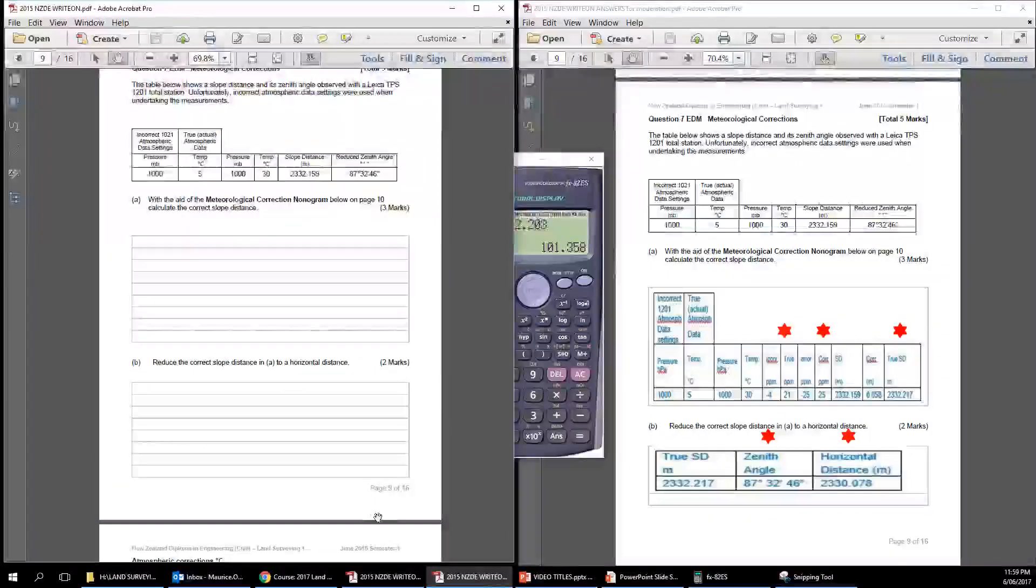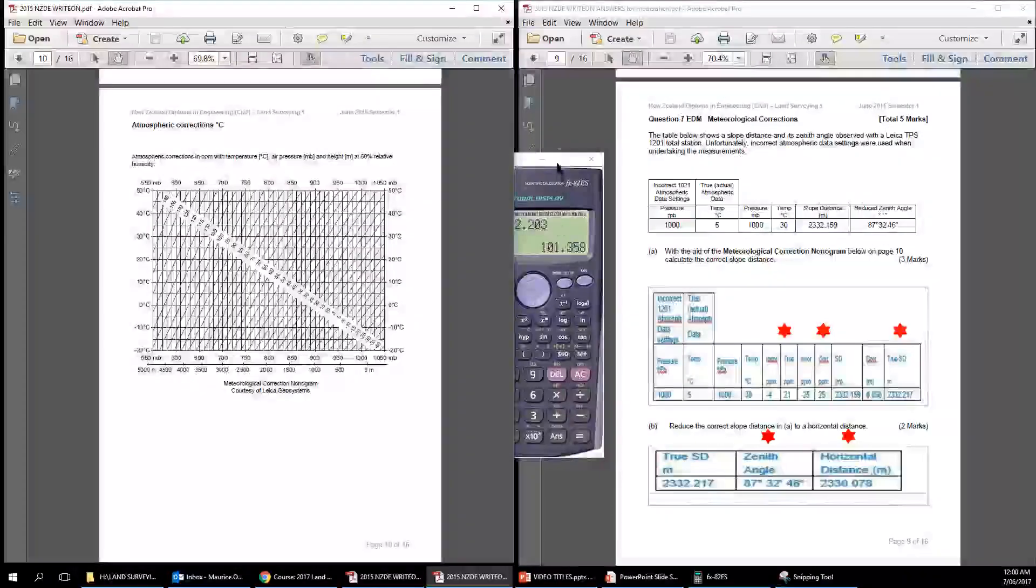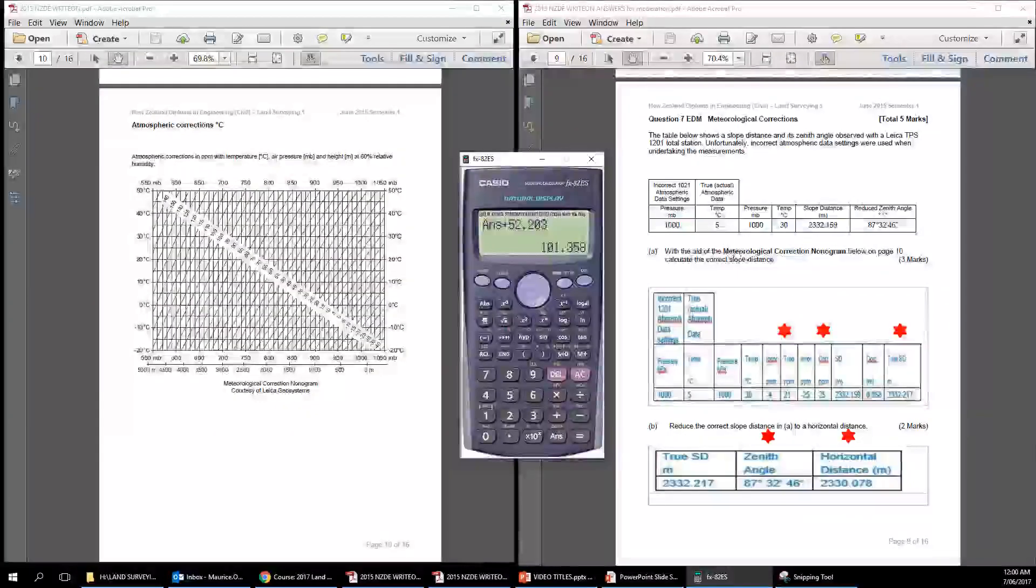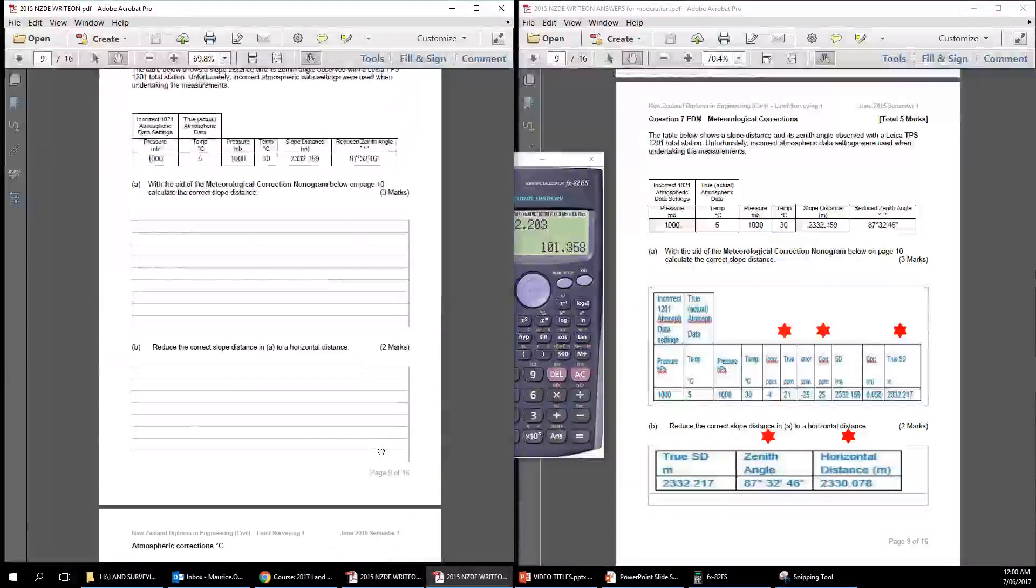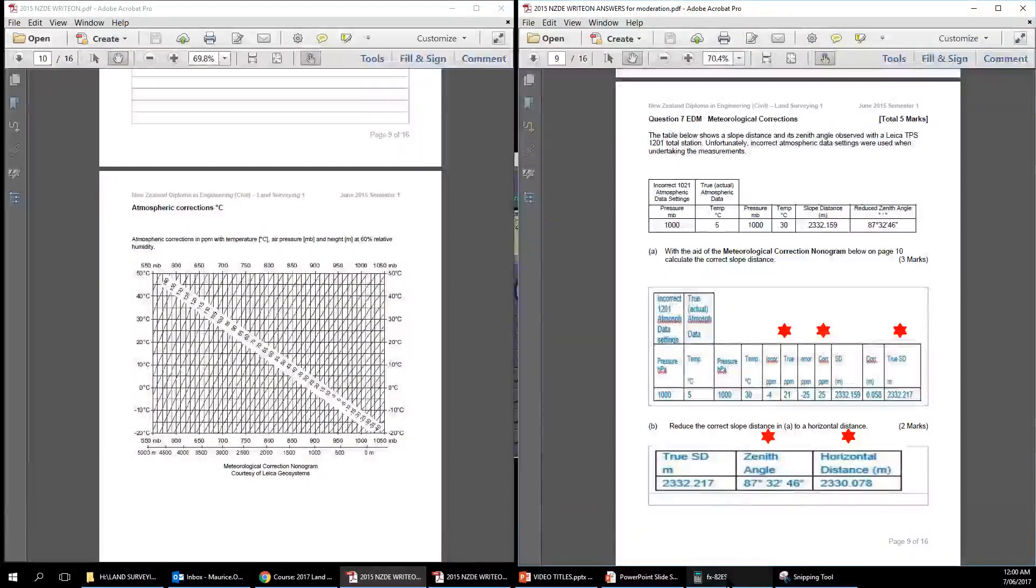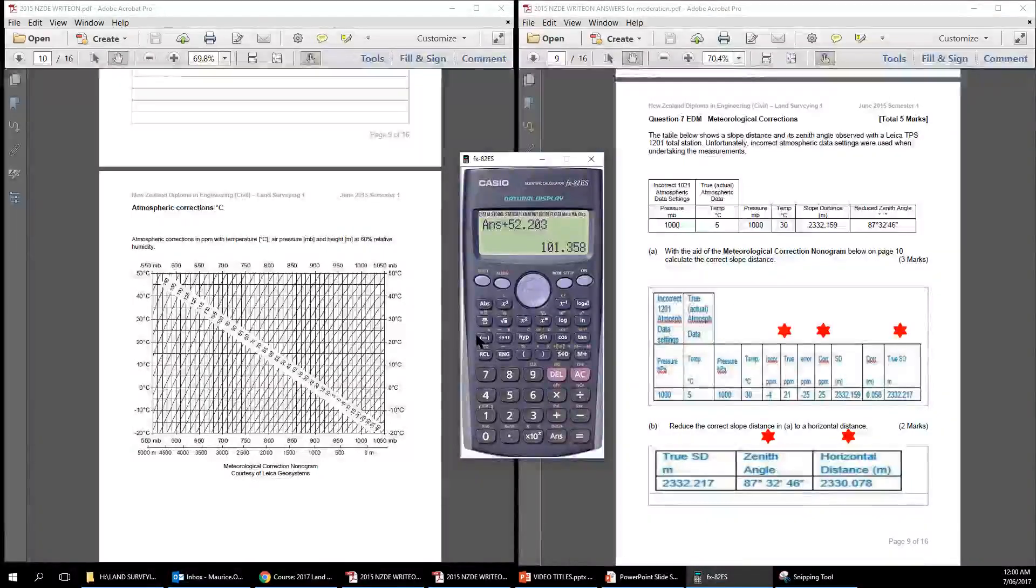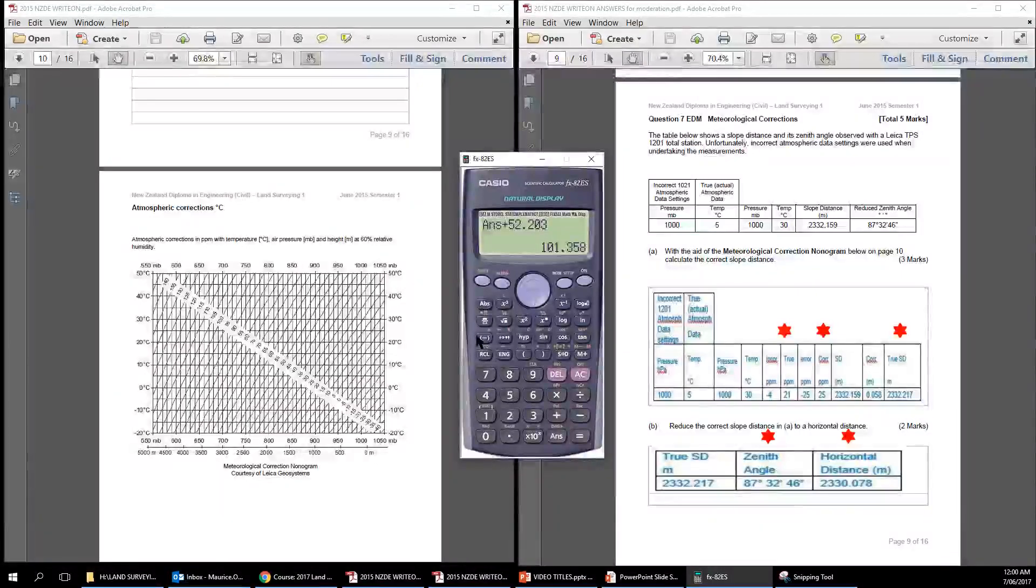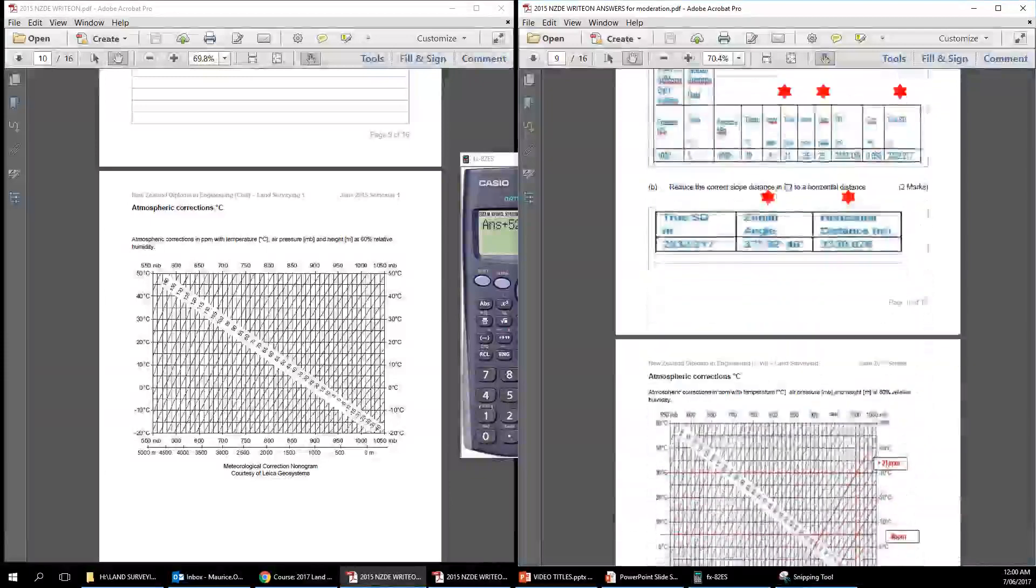So first of all, let's, we've got that there, I might just put that up there, might be quite helpful. And we'll just click on our little calculator here. So first of all, looking at here, what we can see there is that the pressure is 1000, temperature of 5 is incorrect. So the pressure there is true. So the incorrect parts per million, we need to look that up on the nomogram.